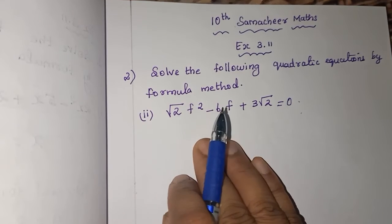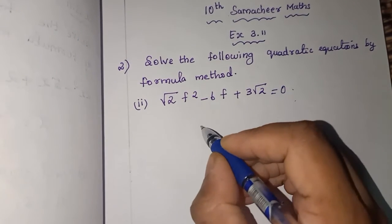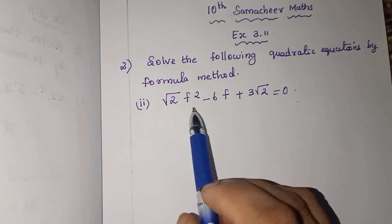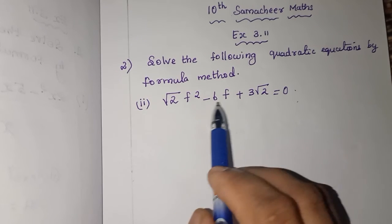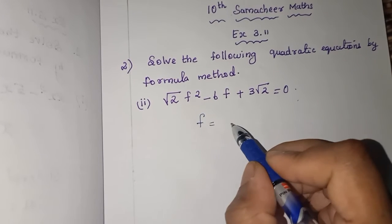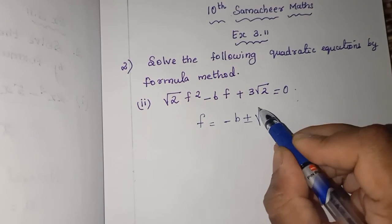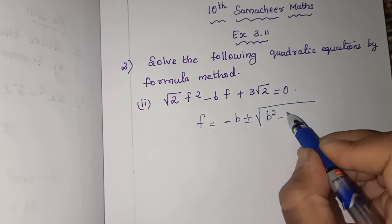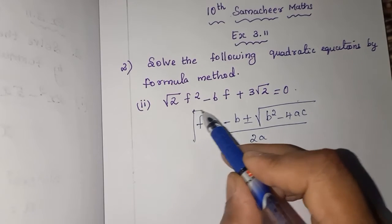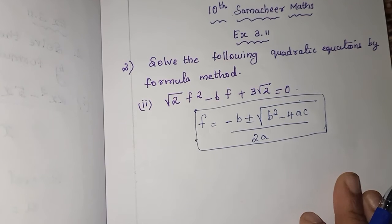How will you write the a value, b value, c value to apply in the formula? First you write the formula. In the previous sum we wrote x equals, but here the variable is f. So I am writing f = (-b ± √(b² - 4ac))/2a. This is the formula. Remember it. Every sum you write the formula and do.